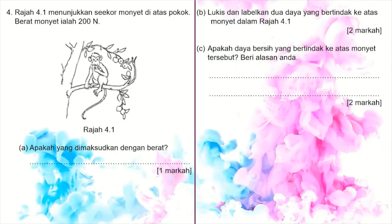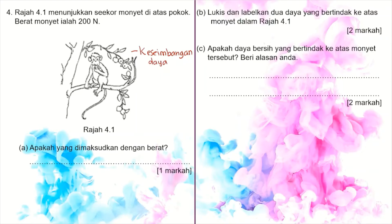Contoh soalan nombor 4: rajah 4.1 menunjukkan seekor monyet di atas pokok. Monyet duduk rehat, tidak bergerak — konsep yang terlibat adalah keseimbangan daya. Bila sebut keseimbangan daya, oleh kerana monyet berada pada satu ketinggian, daya yang dipertimbangkan adalah daya ke atas dan daya ke bawah. Daya bersih adalah sifar kerana objek tidak bergerak.